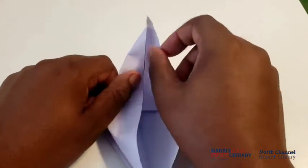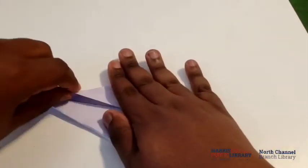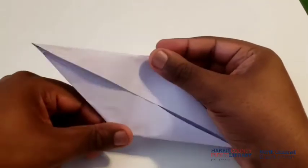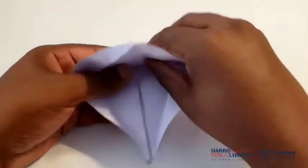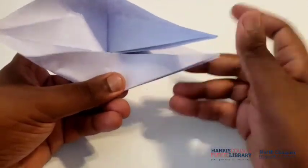Fold this outer edge just like this into a diamond shape, flatten it out. Then we're going to flip it over and do the same thing to the other side, using that crease again to flatten this out into a diamond.